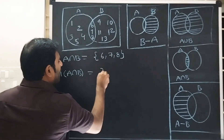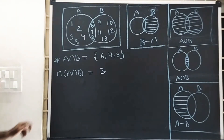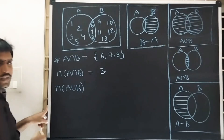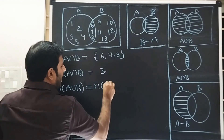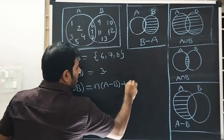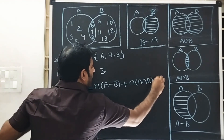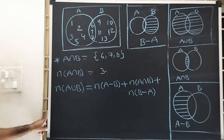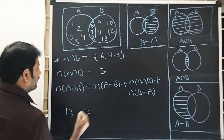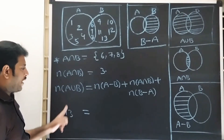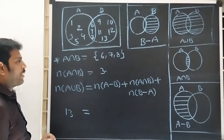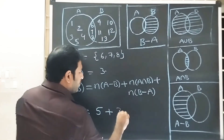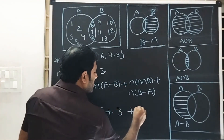N of A union B is equal to N of A minus B plus N of A intersection B plus N of B minus A. So: N of A union B equals 13, N of A minus B equals 5, N of A intersection B equals 3, N of B minus A equals 5.